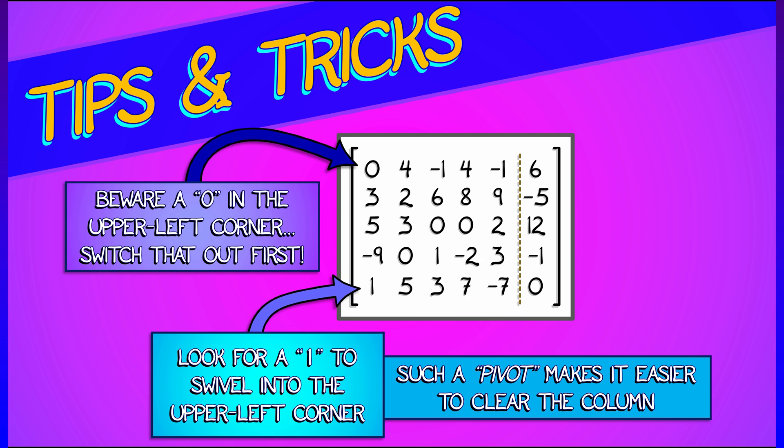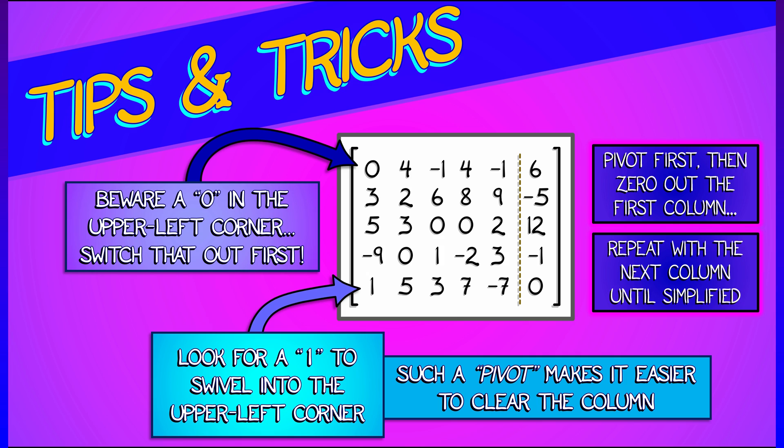That one in the corner is called a pivot, and that is going to be your best friend. In general, you want to pivot first, then zero out everything below it in the first column. And then when you move to the next column, your first column is going to stay fine. You just keep going and simplify until you get an upper triangular system, and then life is good.